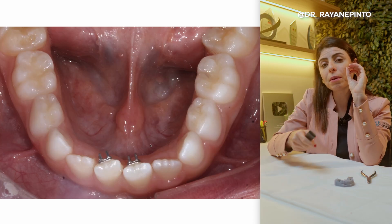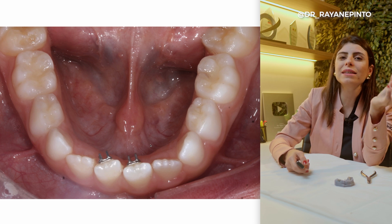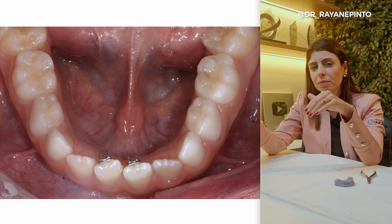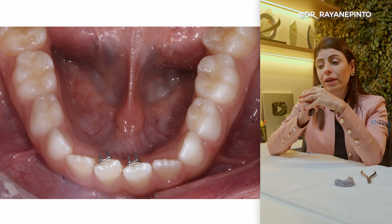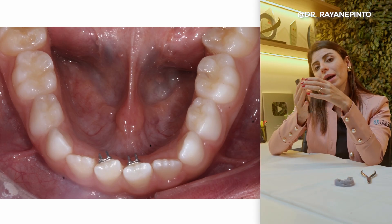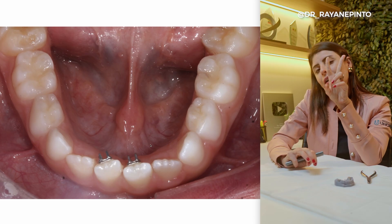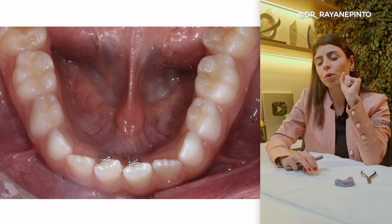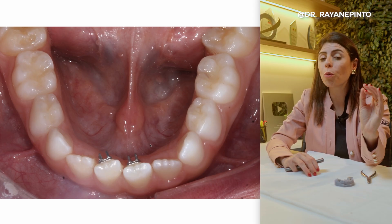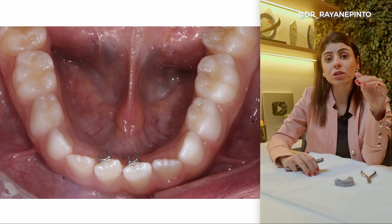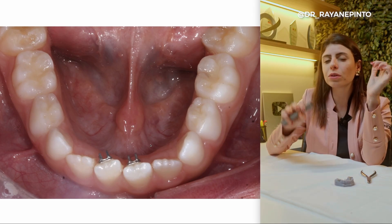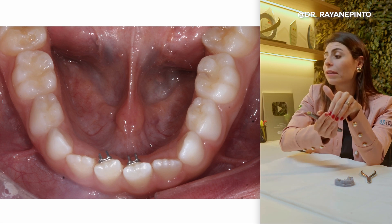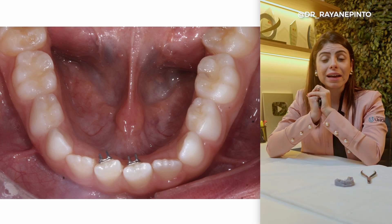One last appliance I really like to use — which is actually an accessory — is spurs. When I notice that the tongue is in an incorrect position, for example resting more on the lower arch, I can place two or four spurs, though two is most common. I create a strong adhesive system with no contamination so the spur doesn't come off, and I also use a good resin. I place them in the center of the incisors to train the tongue not to move into that position.